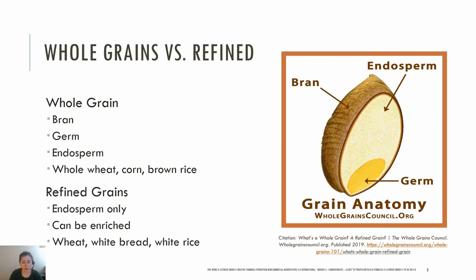When a food is refined, the outer bran layer is removed along with the germ. The bran contains antioxidants, B vitamins, and fiber. The germ, which is the embryo of the seed, contains B vitamins, protein, zinc, magnesium, and healthy fats. What remains is the endosperm, which is mostly starch, and a small amount of protein, vitamins, and minerals.